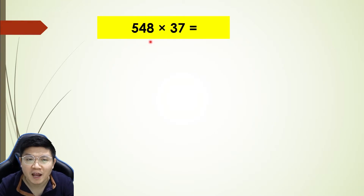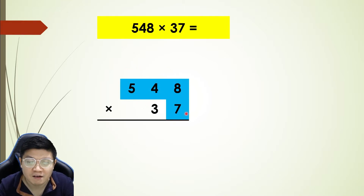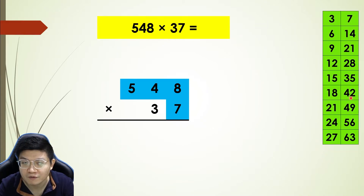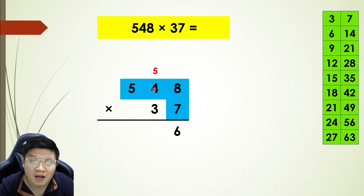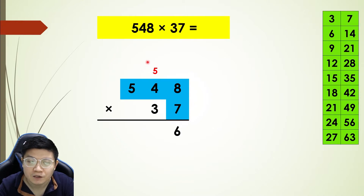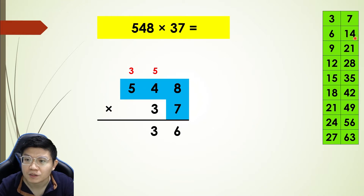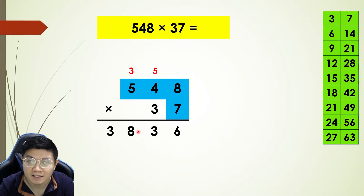Next, multiply by two digits: 548 multiplied by 37 — this is two digits. Of course I need the times table of three and also the times table of seven. The blue color represents the first step. Seven times eight — one, two, three... eight — which is 56. Put five here and six here. Next, seven times four: one, two, three, four — 28, plus five from before, which is 33. Next, seven times five: one, two, three, four, five — which is 35, plus three gives 38.